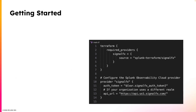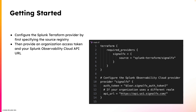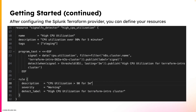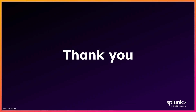If you'd like to start using the Splunk Terraform provider, it's pretty easy to set up. You'd first want to specify the source registry of the Splunk Terraform provider. After doing so, you can then configure the actual provider with an organization access token and your Splunk Observability Cloud API URL. Once you've set up the provider, you can then define Splunk Observability Cloud resources. In this example, I'm defining a simple detector that detects high CPU utilization for a specific Kubernetes cluster. If you'd like to see me walk through this example, I have another video where we actually implement this detector in Splunk Observability Cloud, so be sure to check that out. I hope you enjoyed this video, and if you did, we'd love to hear your feedback.